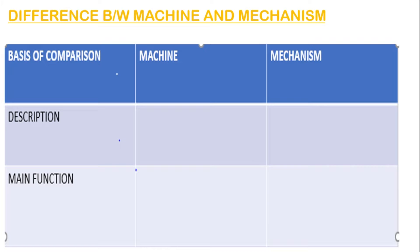So, the basis of comparison — on what basis we are comparing the machine and mechanism. The first one is the description. How do you describe the machine? Machine is described as: if a system is used with an objective of transforming mechanical energy, then it is described as a machine.